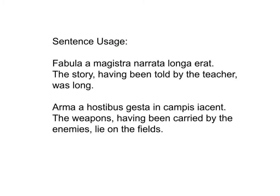Now we will look at how we use these participles in a sentence. Remember participles have an adjective feature — they describe nouns in number, gender, and case. It is true with the perfect passive participles too. Let's look at the examples. Narrata is the perfect passive participle in the first sentence. I recognize narrata as the fourth principal part of the verb narro, narrare, narravi, narratus. Narrata describes fabula in number, gender, and case. Both are feminine, singular, and nominative. This is called the adjective feature of the perfect passive participle.